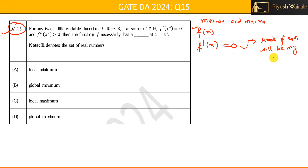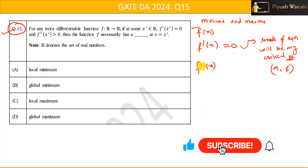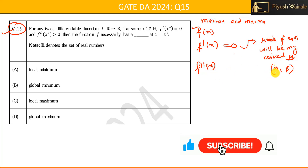Once we equate f'(x) to 0 and solve this equation, the roots of that equation will be the critical points — suppose alpha and beta are the two critical points. In the next step, we take a second derivative of the function, differentiating f'(x) again to get f''(x).